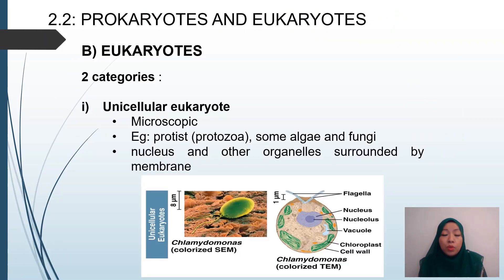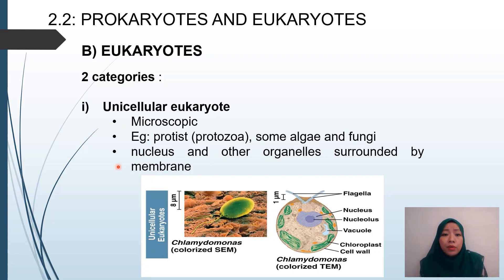Next, we move on to eukaryotes. There are two categories: unicellular eukaryotes and multicellular eukaryotes. Unicellular eukaryotes are microscopic, meaning they need to be observed under a microscope. Examples include protozoa, some algae, and also fungi. The nucleus and other organelles are surrounded by membranes — this is one of the important characteristics of eukaryotes. An example of a unicellular eukaryote shown here is chlamydomonas.